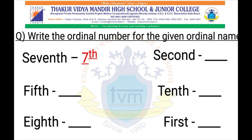Now let's write the ordinal number for the given ordinal name. S-E-V-E-N-T-H — 7th. So we write the ordinal number next to it, that is 7th. Same way you read the rest of the ordinal names and write the ordinal number next to it.